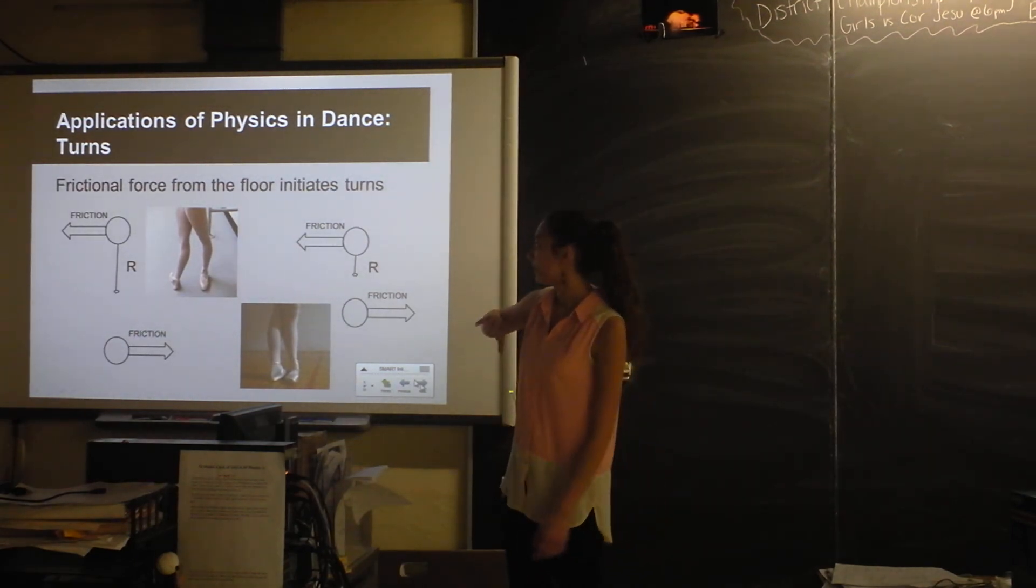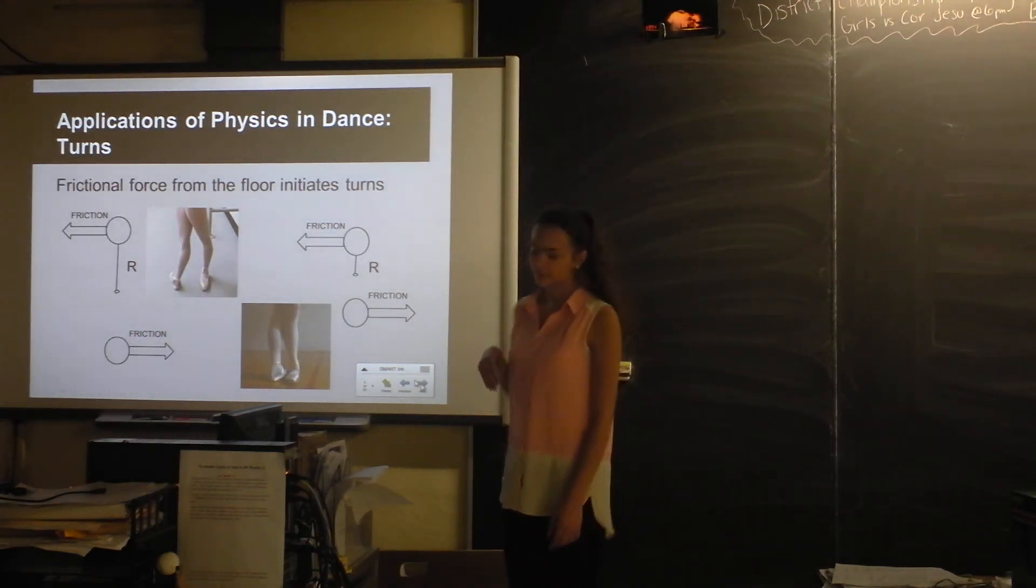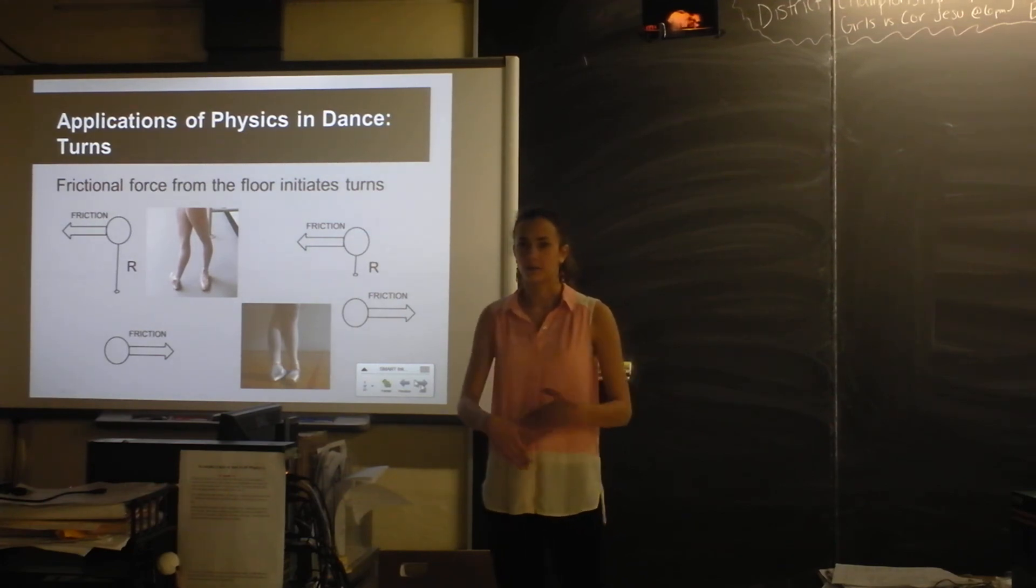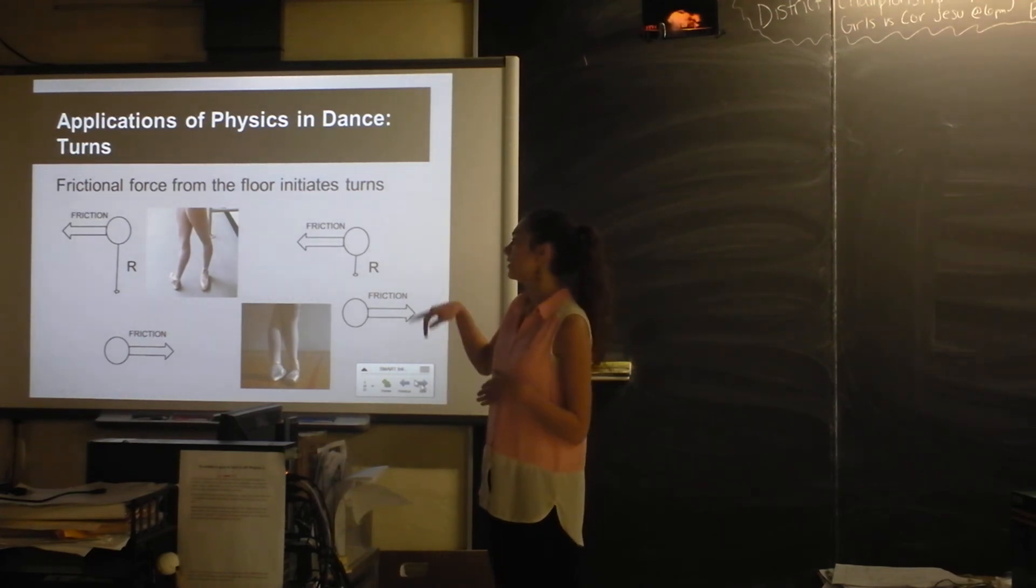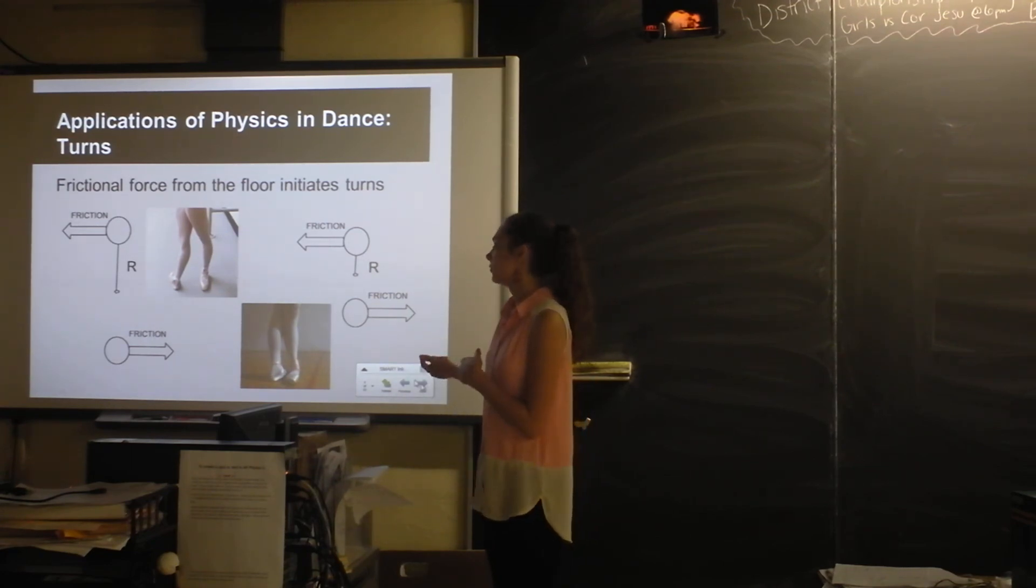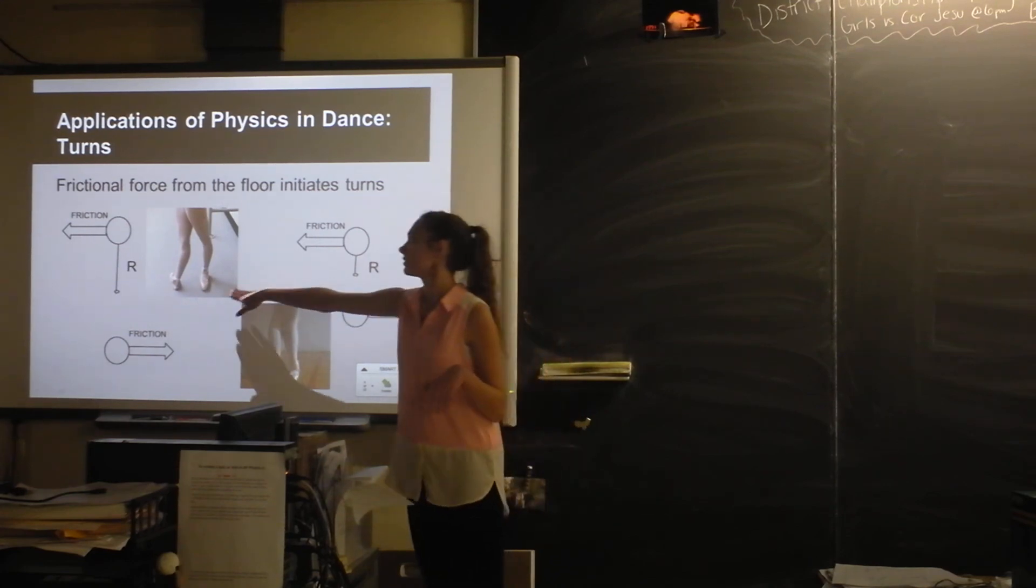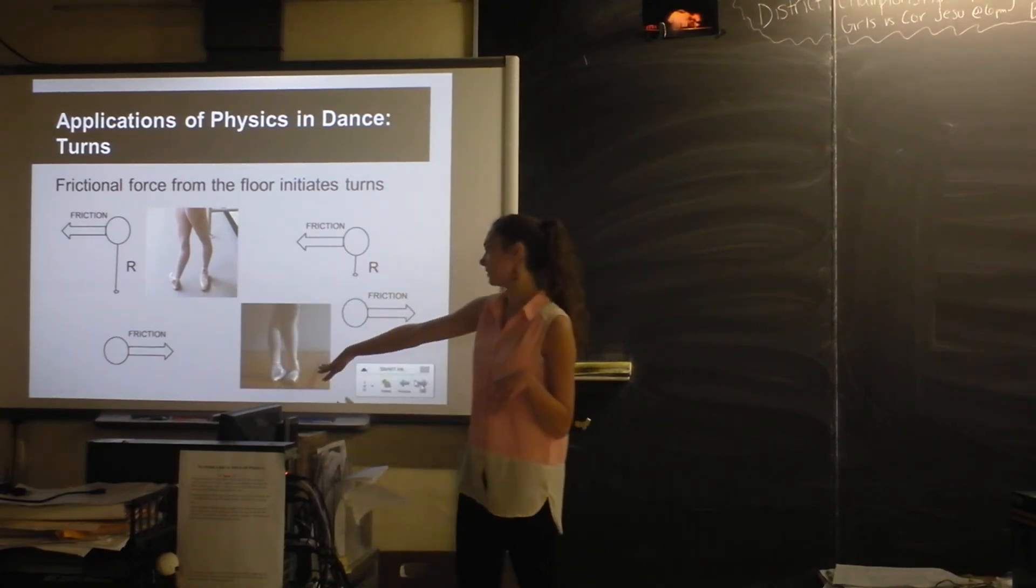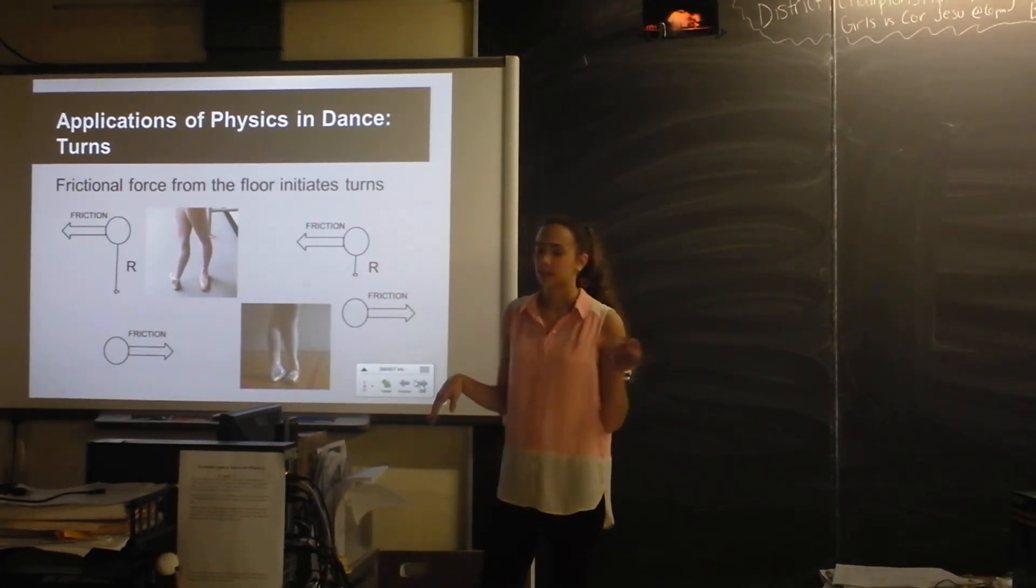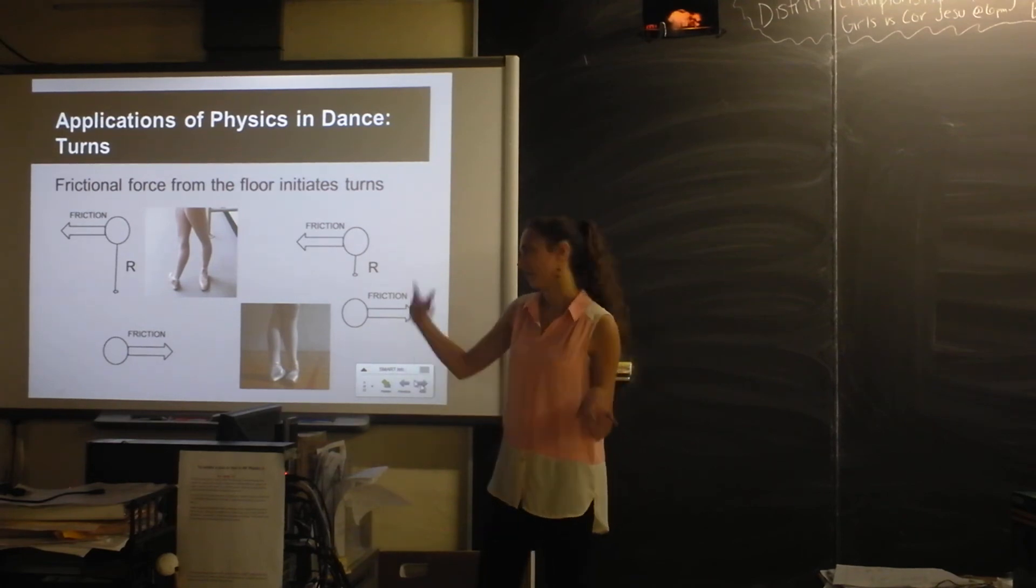What I did my experiment on were turns. And the only reason I'm able to turn is because of friction. So when you're exerting a force on the floor, the floor is exerting a friction force in the opposite direction. And that's what's causing the torque. So the further apart your feet are, the greater your radius is, and the more torque you'll have. Which is why it's easier to turn from a fourth position, which is in that picture, than from a fifth position. So you'll see in my experiment that she always turns from a fourth position.